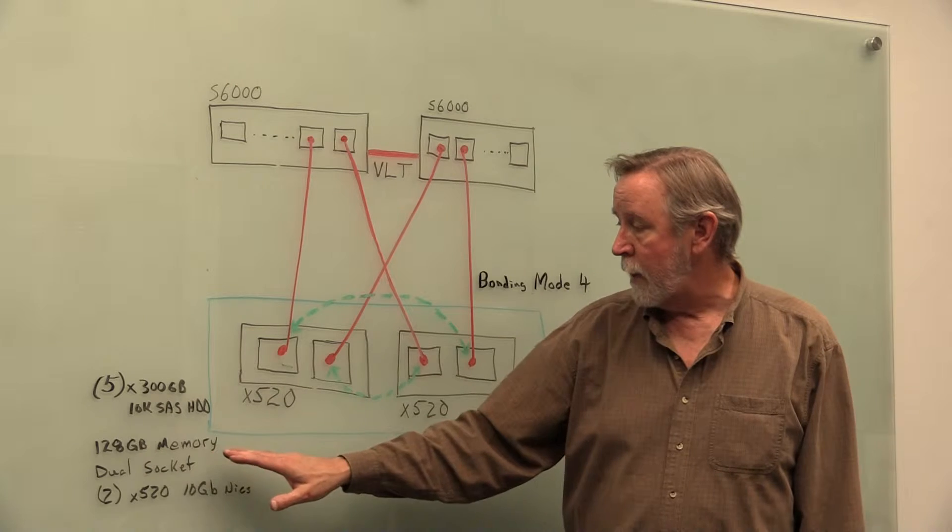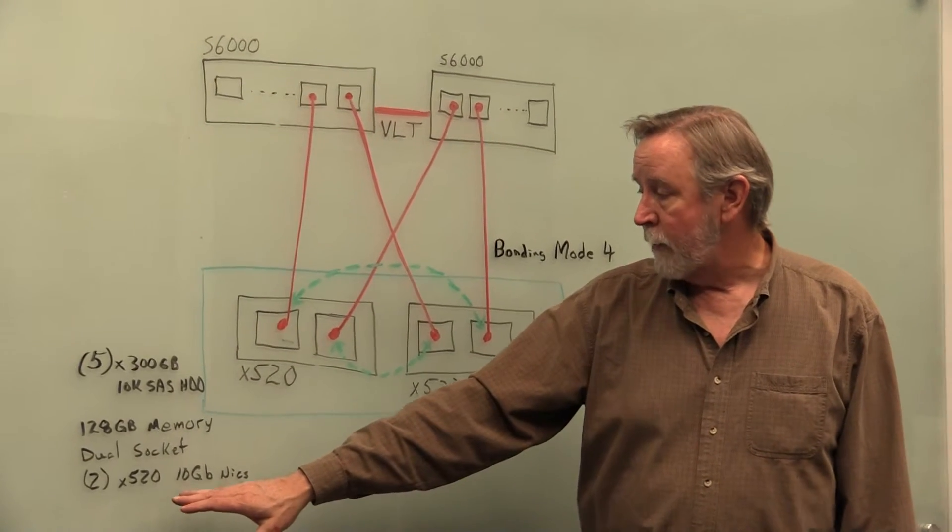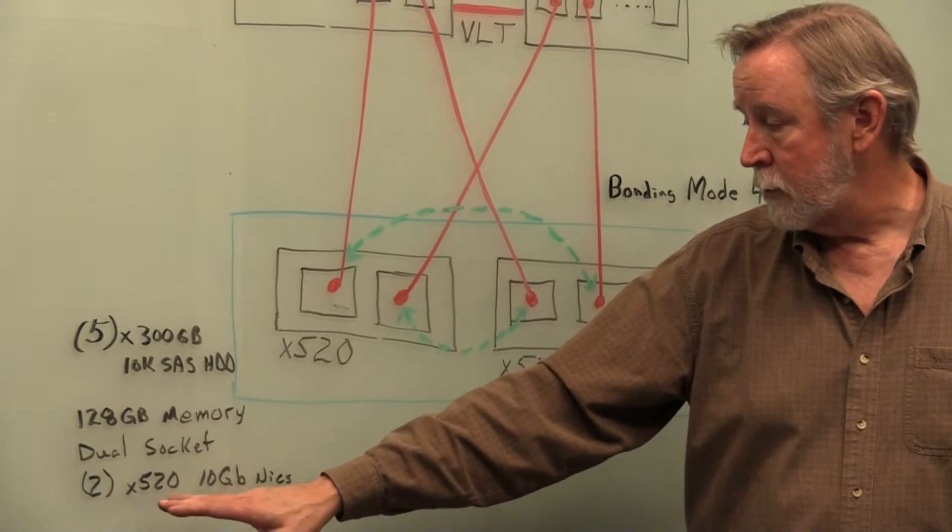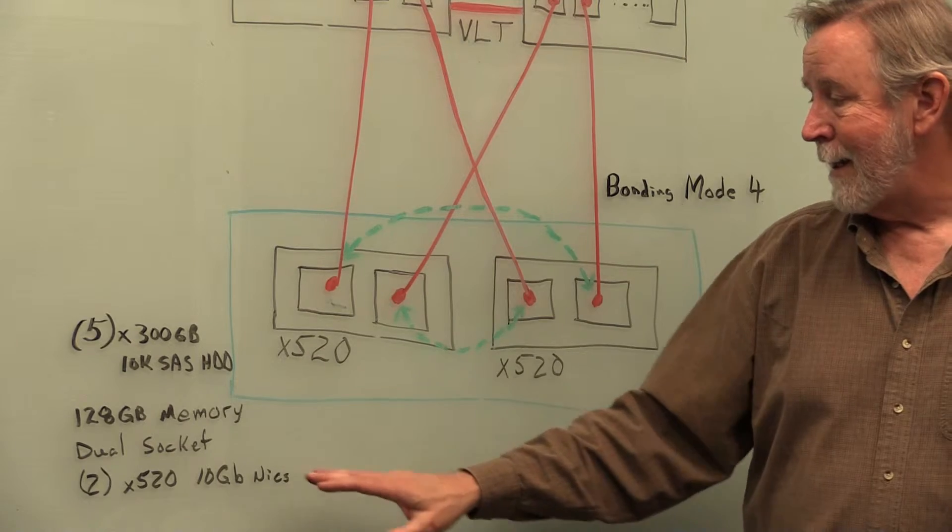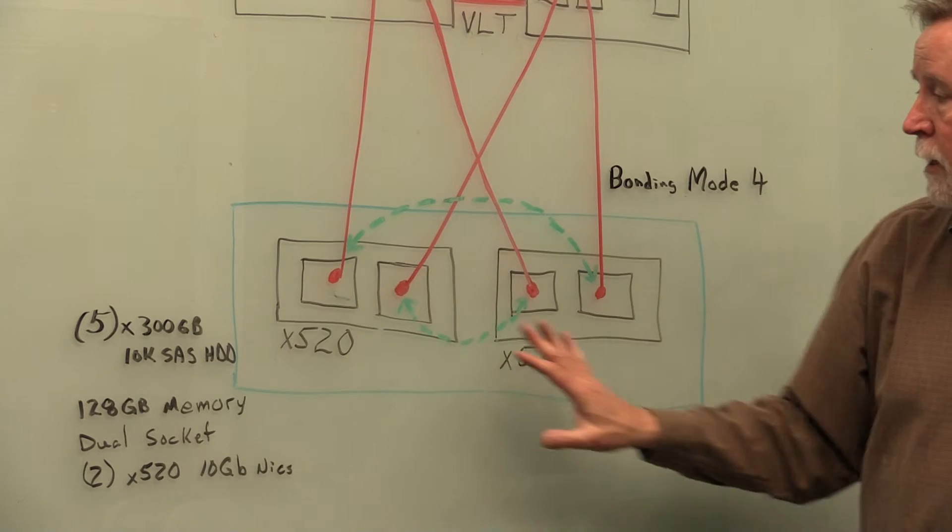We've got 128 gigabytes of memory. These are dual socket systems. And we've got, and this is the important part for Enterprise, is we've got two dual 10 gig NICs. These happen to be Intel 520 cards. And this is what I'm showing here.